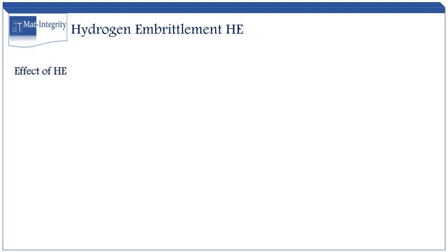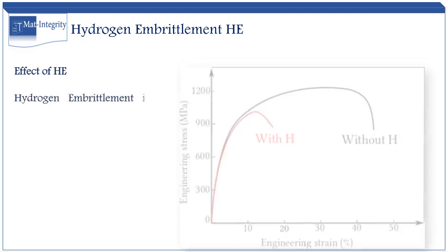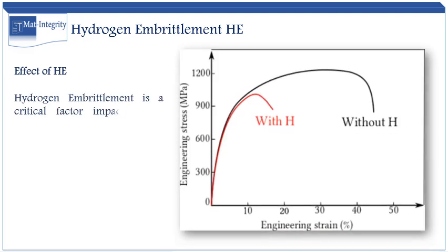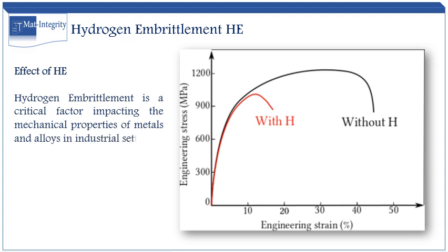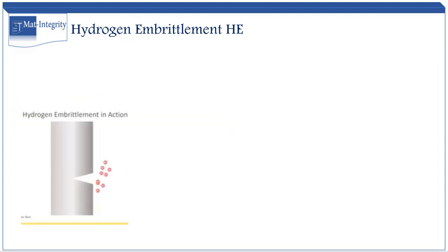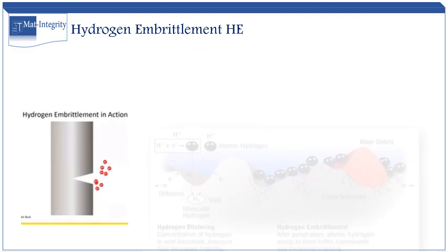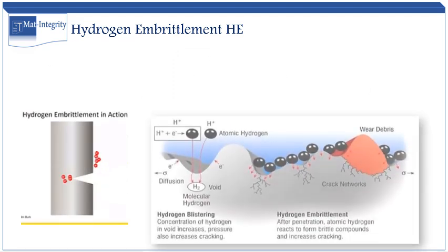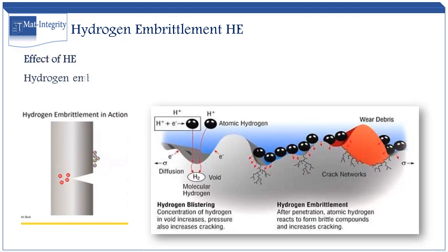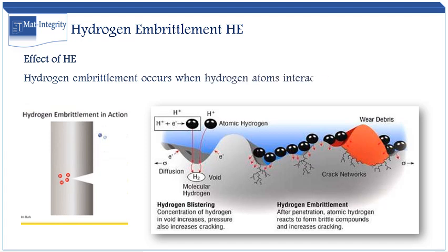Let's uncover the phenomenon known as hydrogen embrittlement. It's a critical factor impacting the mechanical properties of metals and alloys in industrial settings. Hydrogen embrittlement occurs when hydrogen atoms interact with metal structures, causing a significant deterioration in their mechanical characteristics.